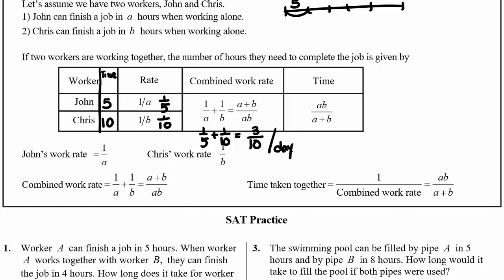To find how many days it will take, we take the reciprocal again. So the time is ten over three days. If they work together, it'll take ten over three days. You have to figure out how to get the rate, and from the rate, how to get the number of days or time — that is very important.